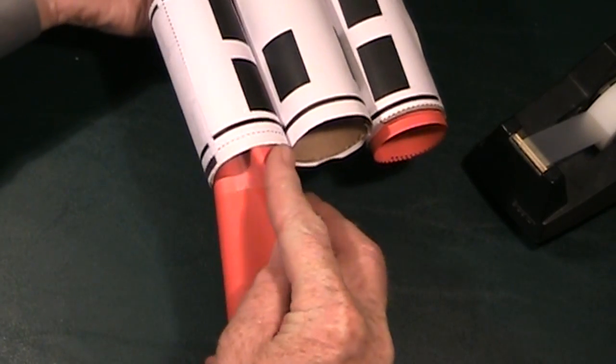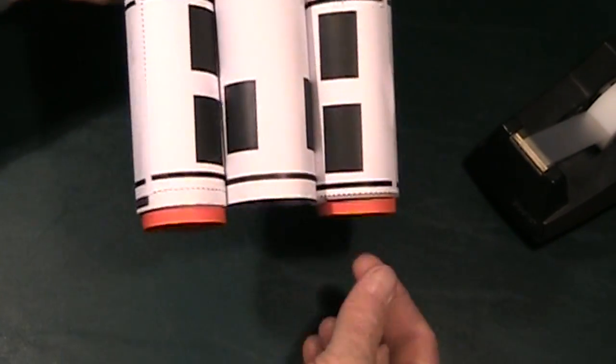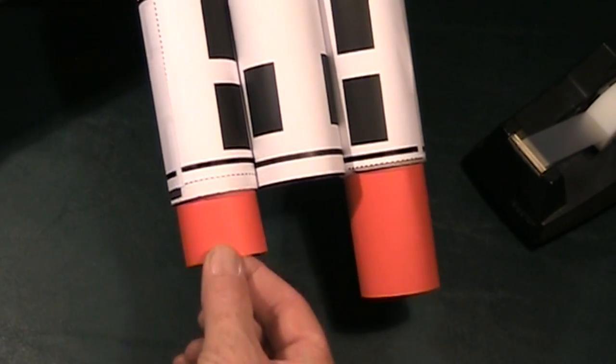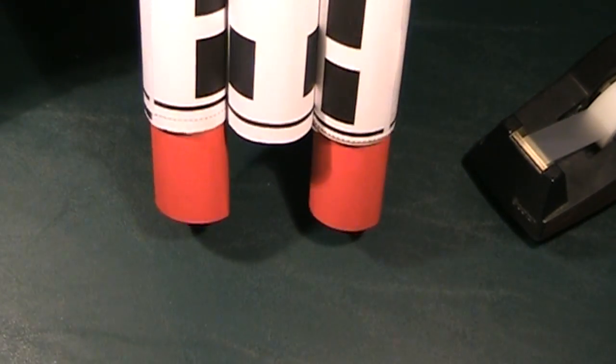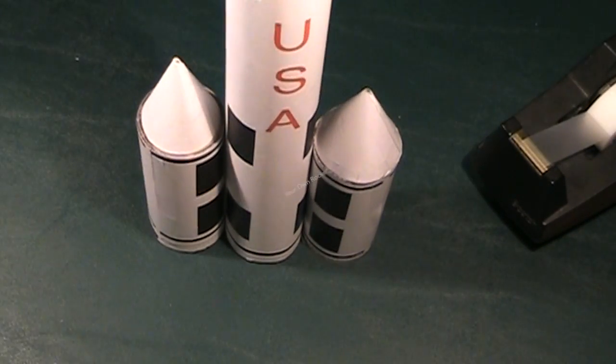Now just slide them inside like this. And then watch. You can pull one out and then the other and pretend to blast off. And when it comes down to land, the fire goes right back up inside. Just like that.